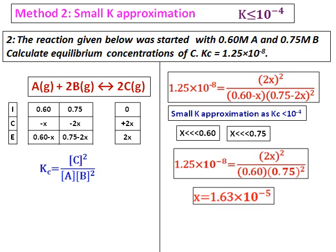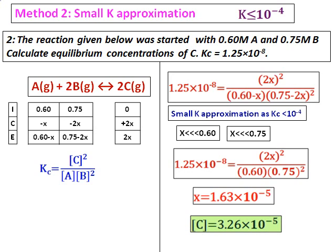Solving for x, we no longer have a quadratic equation — it reduces to a simple x-squared equation. We get the value of x, and the concentration of C will be twice the value of x.